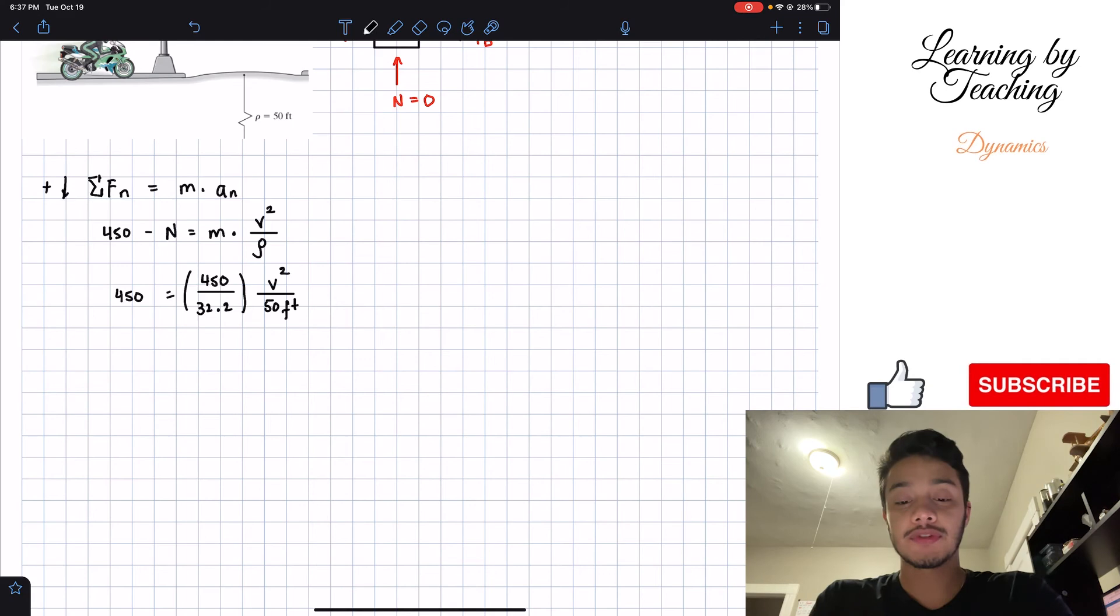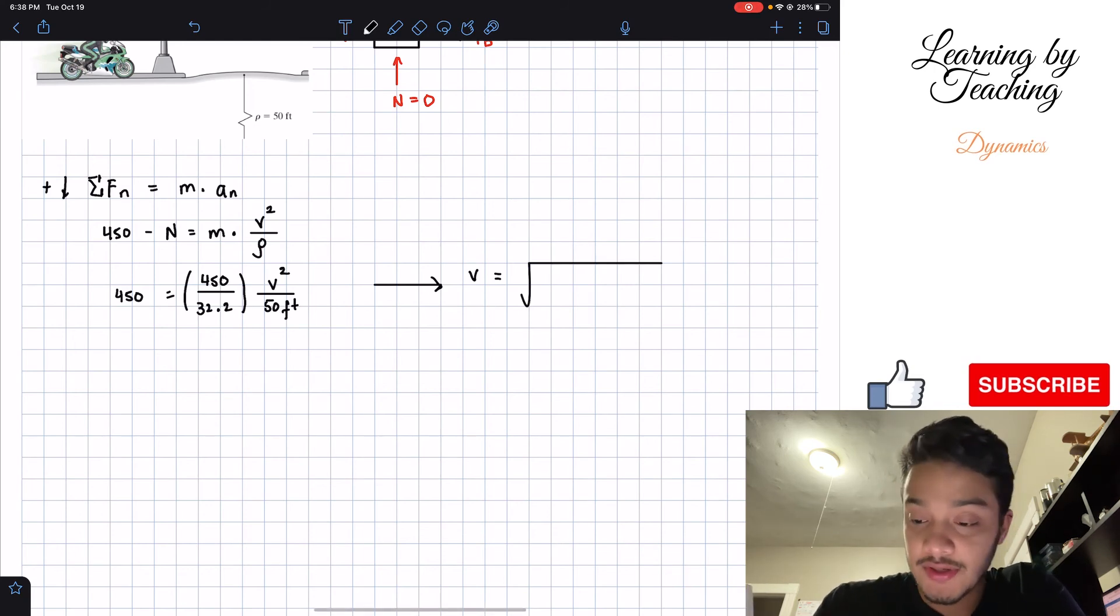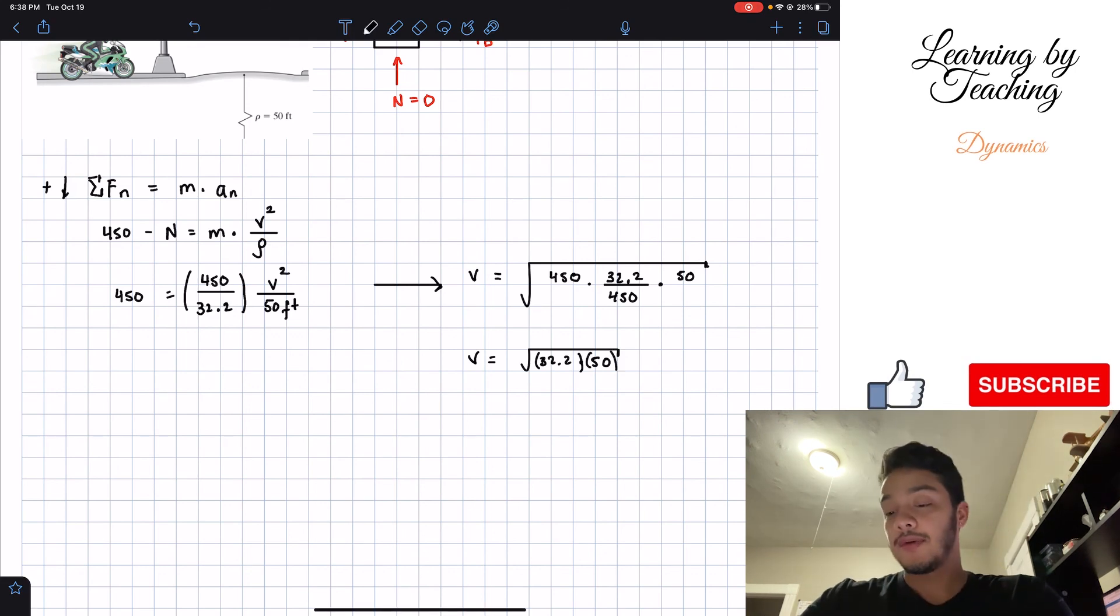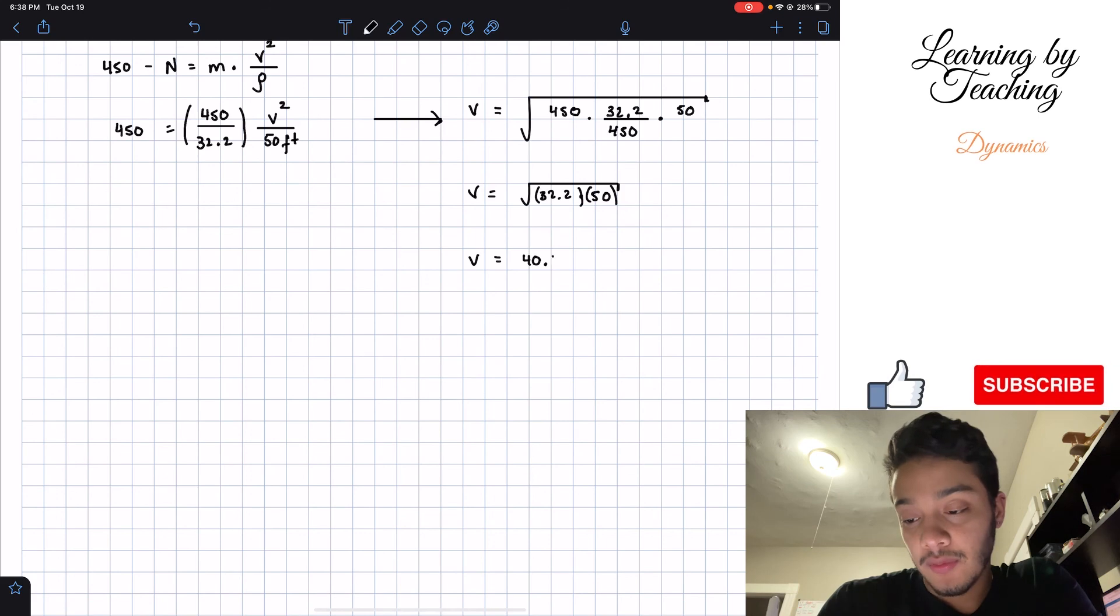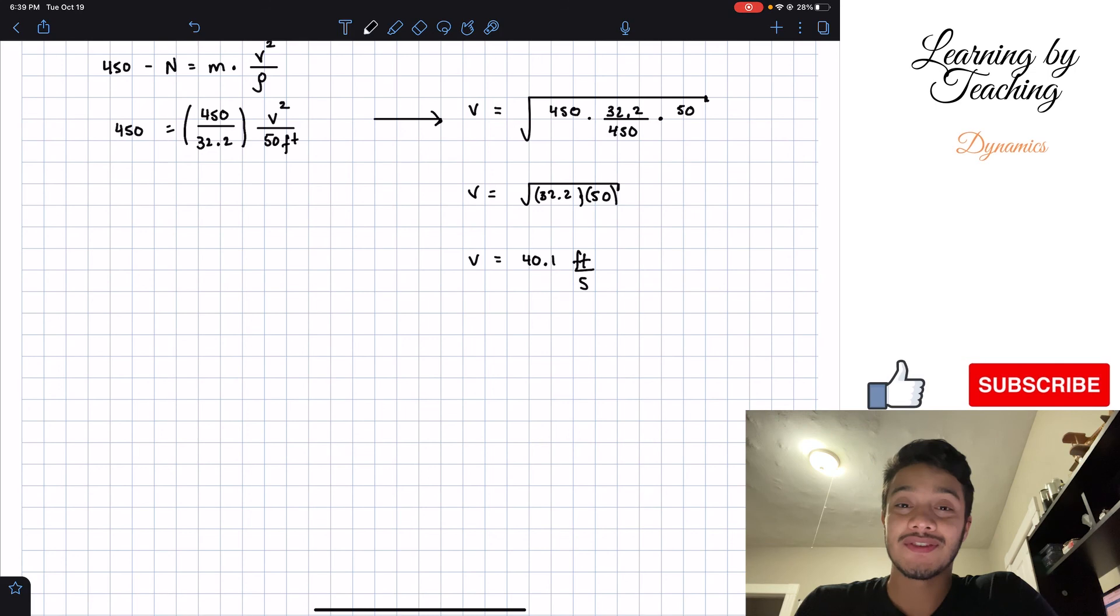Now that we have our equation, we can solve for our velocity. If we solve for our velocity, we're going to have the square root of—let's see—first we have 450 multiplied by the inverse of that fraction, which is 32.2 divided by 450, multiplied by my 50 feet, and this is all that we have in this square root. As we can see, we can cancel 450 and 450, therefore my velocity is just the square root of the multiplication between 32.2 times 50. So I'm going to put a parenthesis just in case so we don't confuse. If we plug this into our calculator, let's see what do we get. We get that our velocity is equal to 40.1 feet per second, if we round up to only one decimal place.